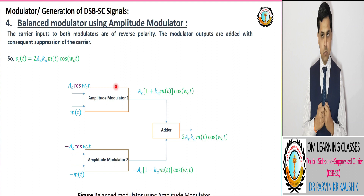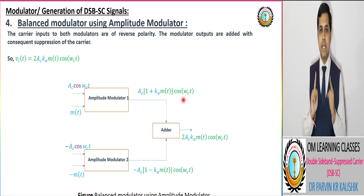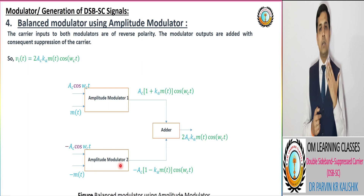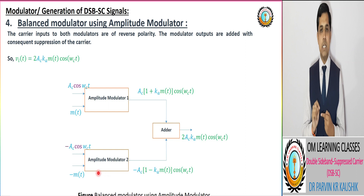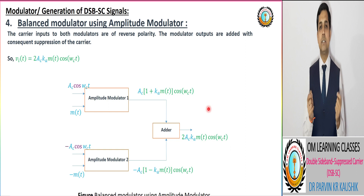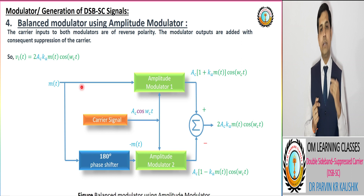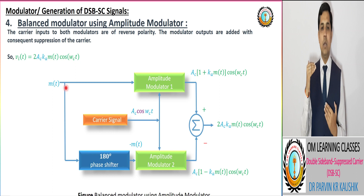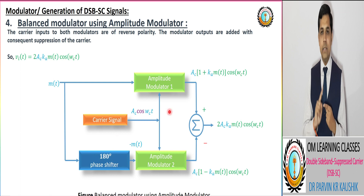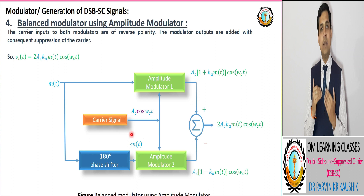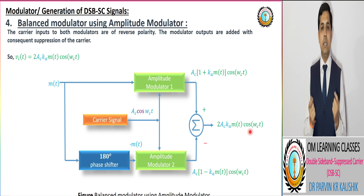As per amplitude modulator, the output is equivalent to AC·[1 + KA·m(t)]·cos(ωC·t), where KA is the amplitude sensitivity factor. As per amplitude modulator 1 we have this output, and as per amplitude modulator 2 we have another output. In the first AM block, we take m(t) and carrier signal; in the second AM block, we have the carrier signal and 180-degree phase-shifted modulating signal. By doing the subtraction, we get the output that is our desired DSB-SC modulated signal.